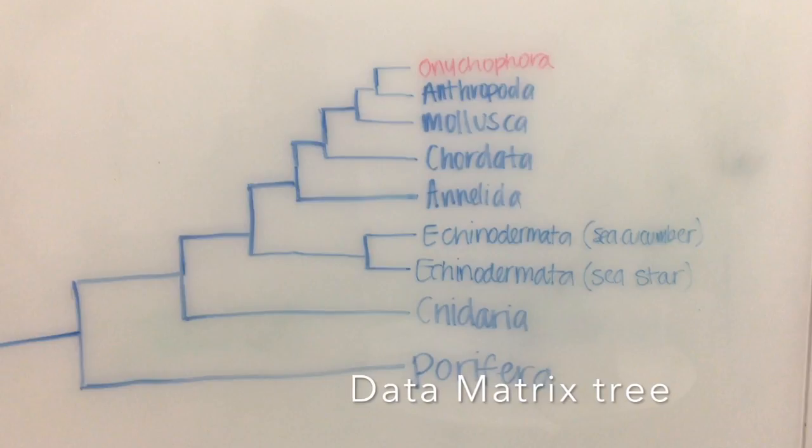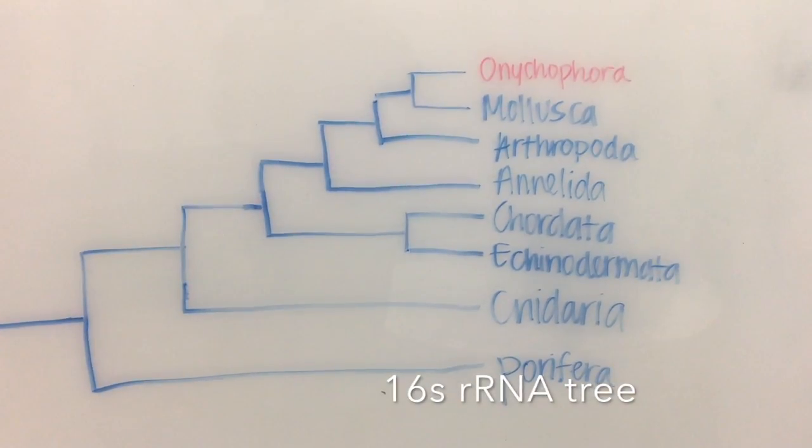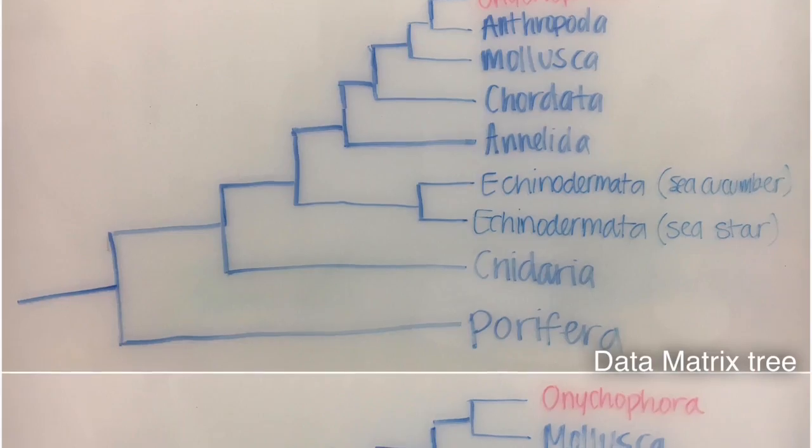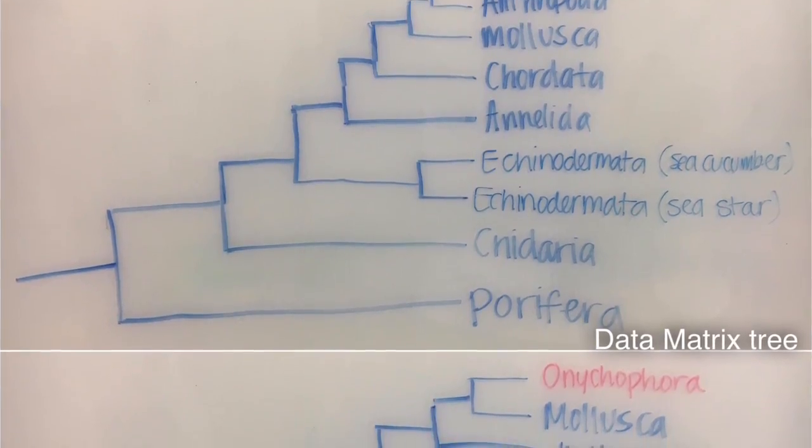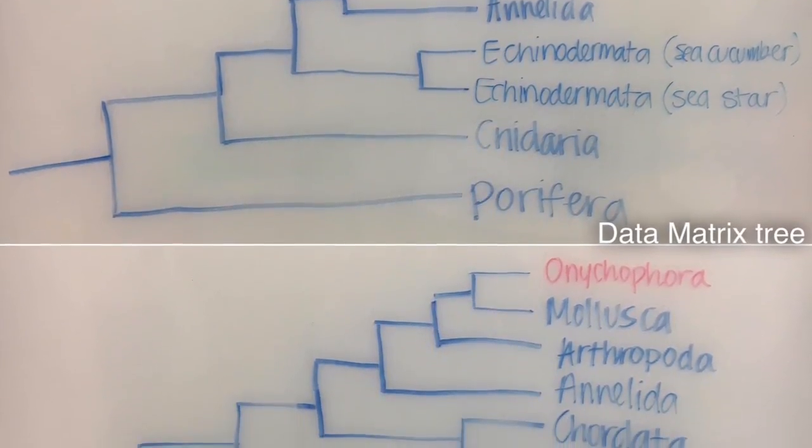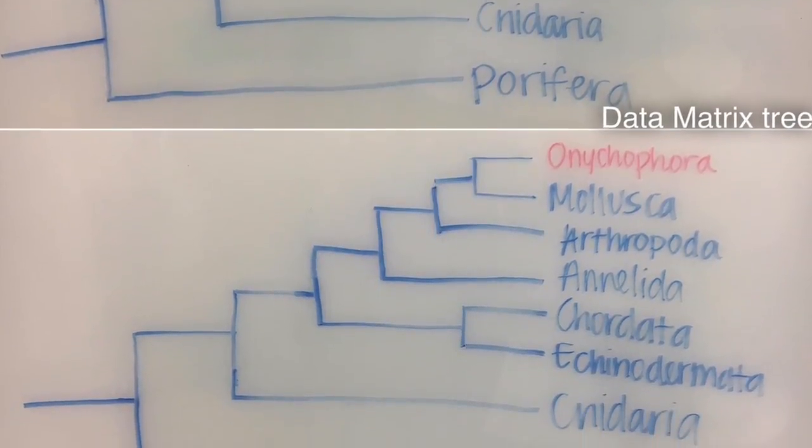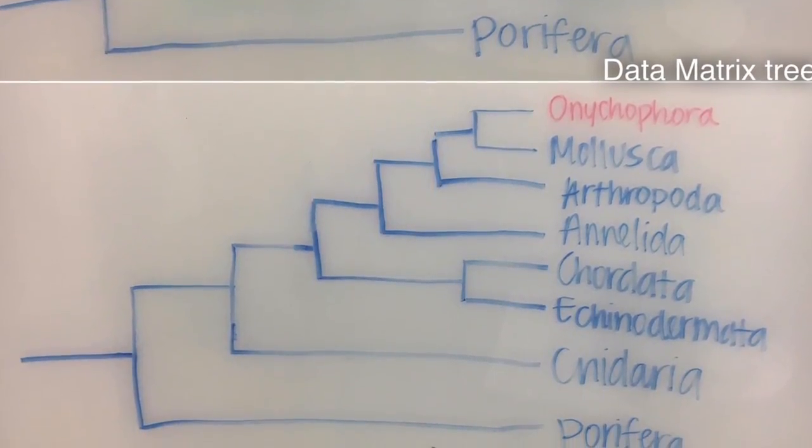The Onychophora's closest relative, according to the data matrix tree, is Arthropoda. According to the 16S tree, Onychophora's closest relative is Mollusca. The difference in these two trees is that Mollusca is the sister taxa of Onychophora in the 16S tree, and Arthropoda is the sister taxa in the data matrix tree. This could be due to the similarities of eyes, antenna, and segmentation as listed in the data matrix.